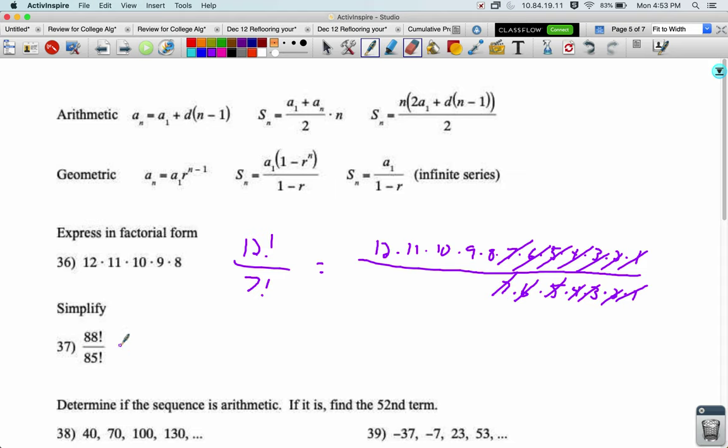Same thing is going to happen here, and this is going to become 88 times 87 times 86, but not times 85 because that cancels out. We can just do this in our calculator: 88 times 87 times 86 is 658,416.